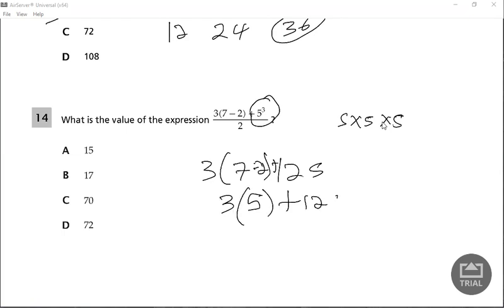We multiply before we add, so 3 times 5 is 15. So that's 15 plus 125 divided by 2. We just add, which gives us 140 divided by 2, which works out to 70. So our answer would be 70.